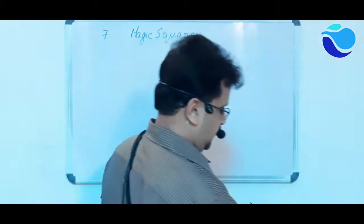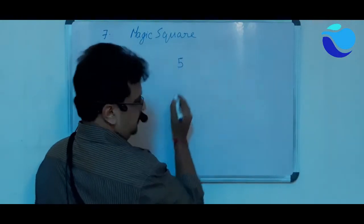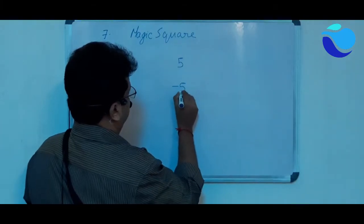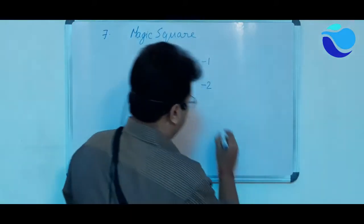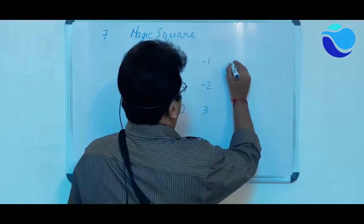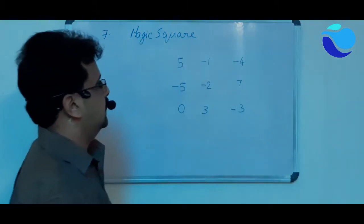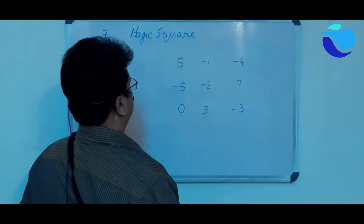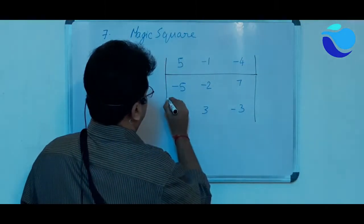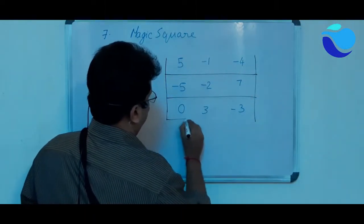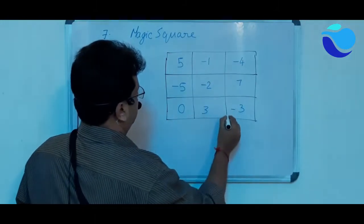The numbers given in the first square are: 5, minus 1, minus 4 in the first row; minus 5, minus 2, 7 in the second row; and 0, 3, minus 3 in the third row.